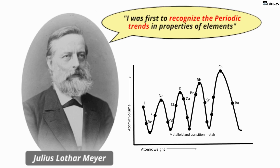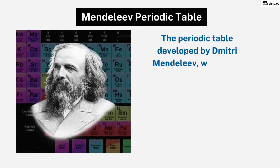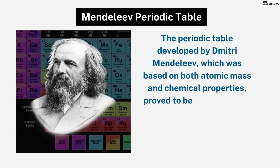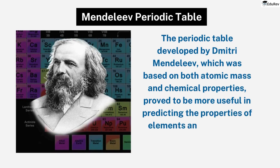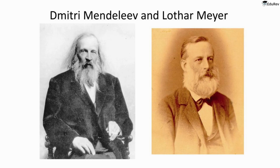Despite the importance of Meyer's work, his classification was eventually discarded because it lacked practical utility. The periodic table developed by Dmitri Mendeleev, which was based on both atomic mass and chemical properties, proved to be more useful in predicting the properties of elements. Interestingly, Meyer's work was not widely recognized during his lifetime; it was only after Mendeleev's periodic table gained popularity that Meyer's work was rediscovered and given the recognition it deserved.